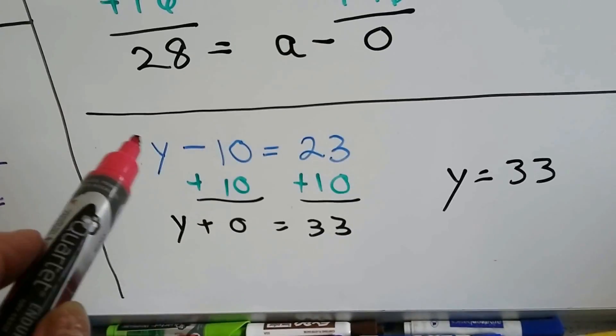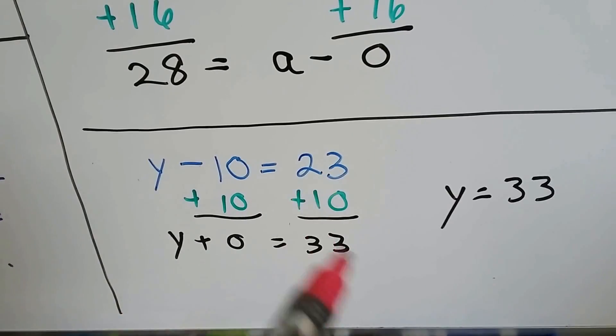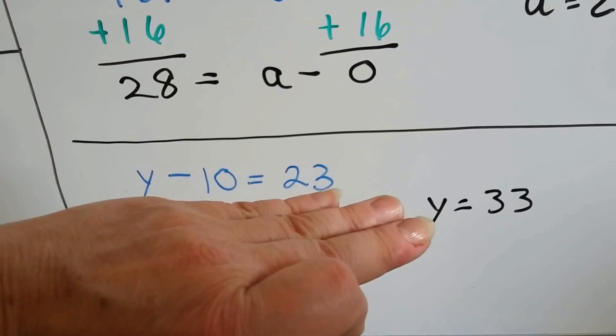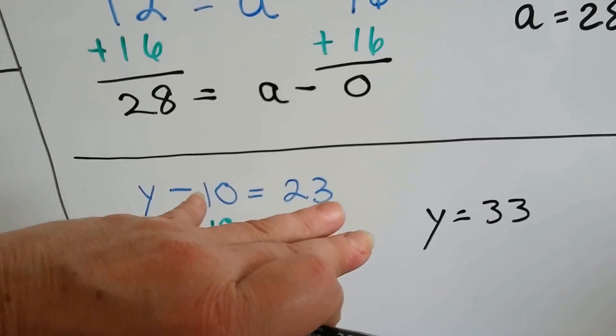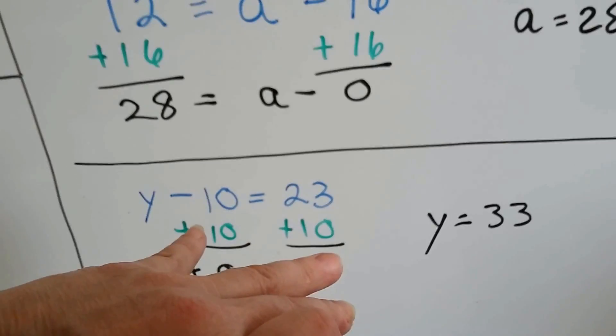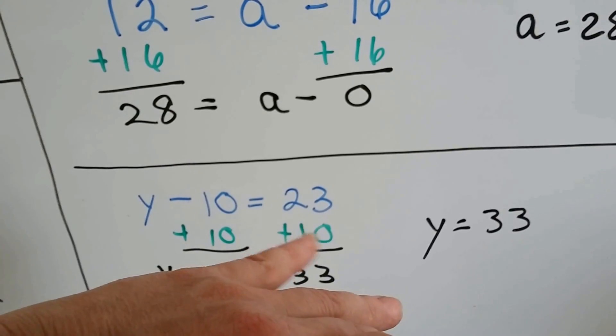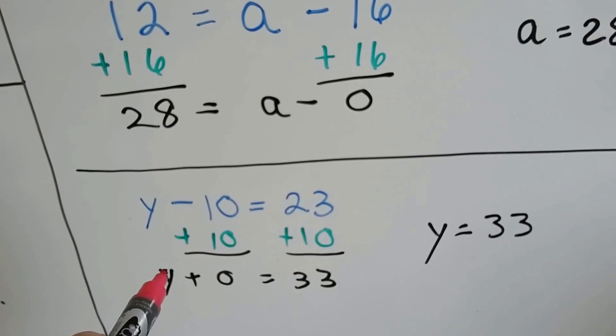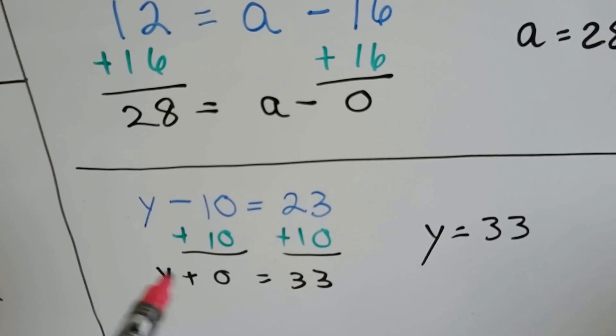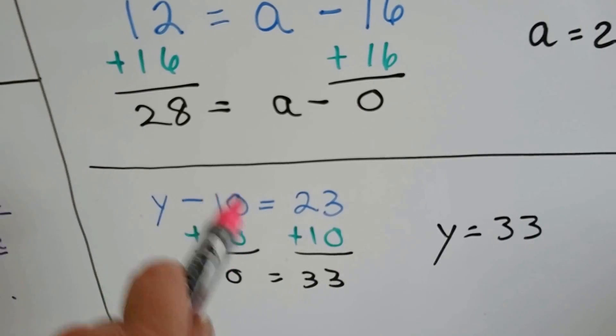Let's do it again. y minus 10 equals 23. We need to isolate the y by itself. Well, if there's a minus 10, we're going to have to do a plus 10 here. So we do the plus 10. The 23 gets jealous. It wants plus 10. And we end up with y is equal to 33. Because we've got this to cancel it out.